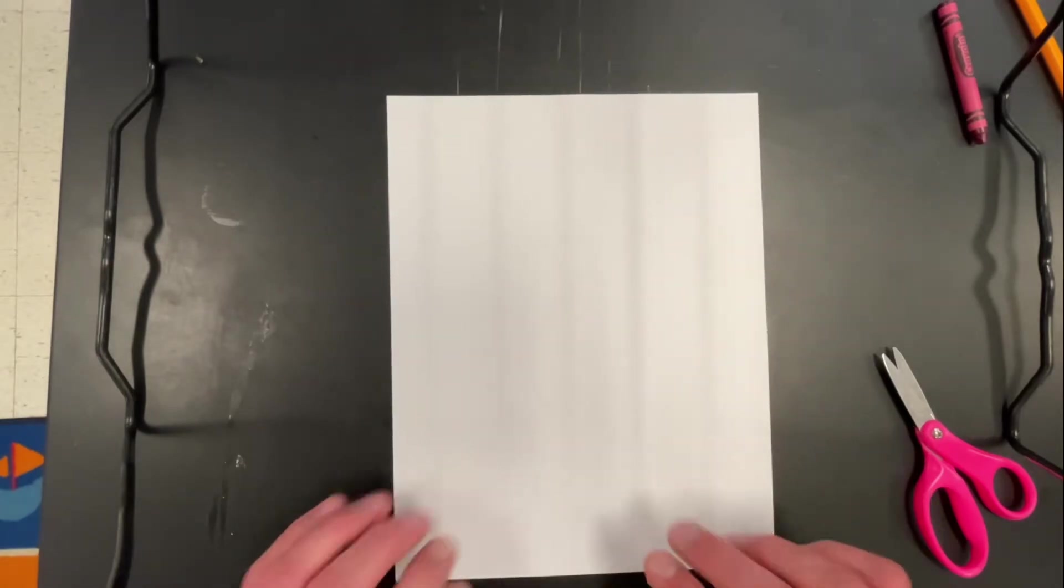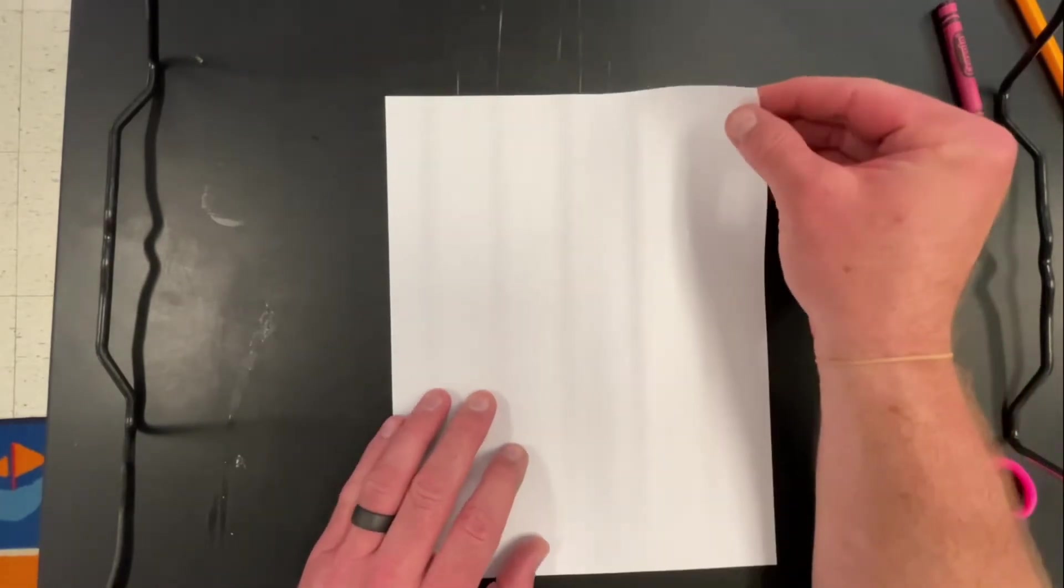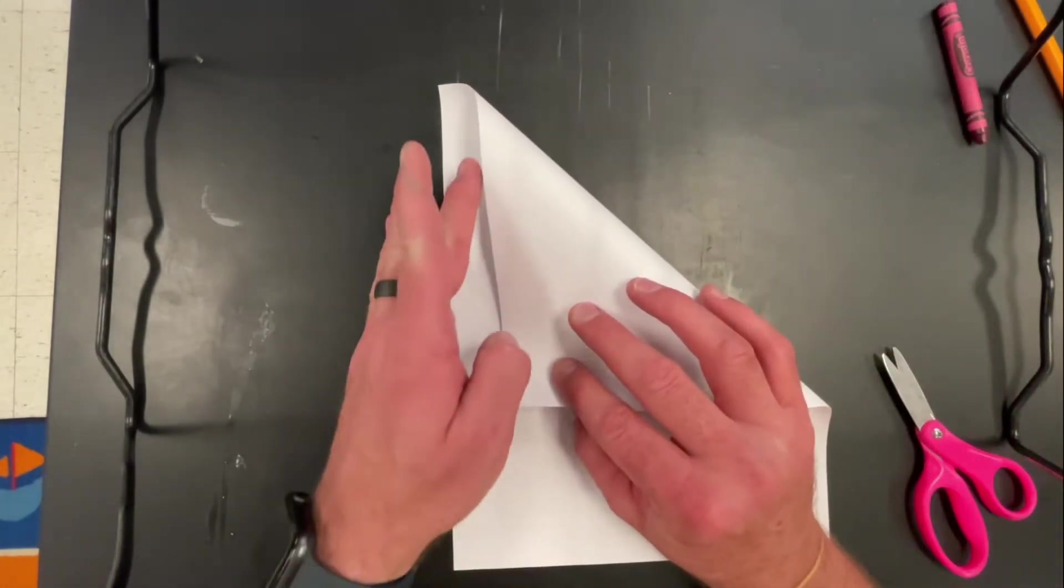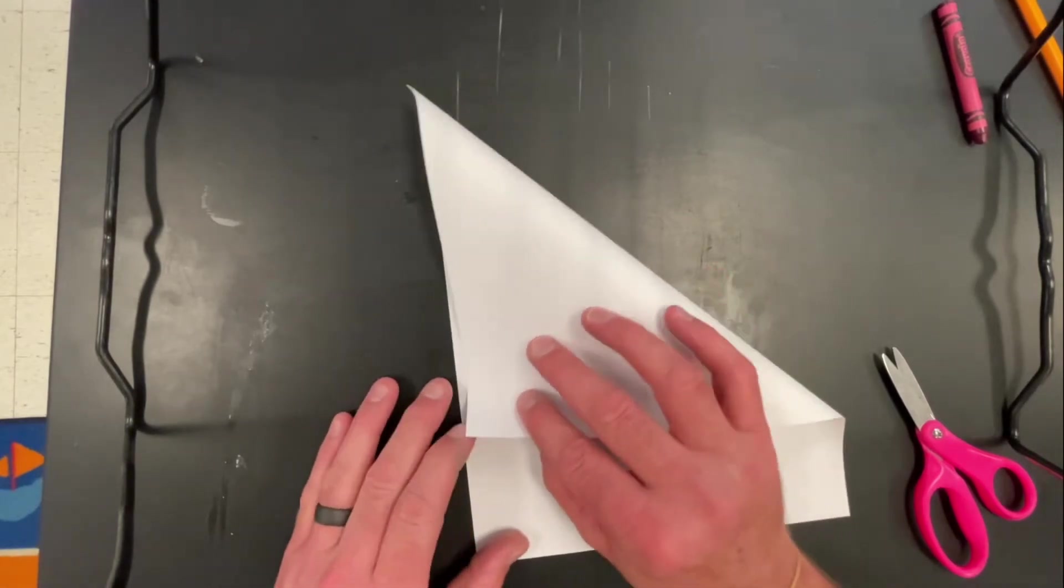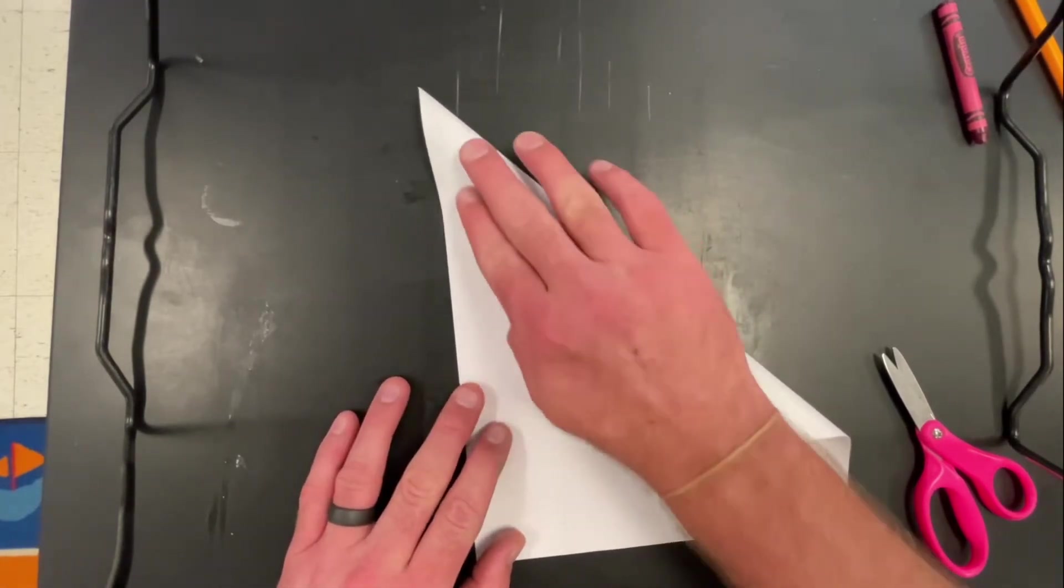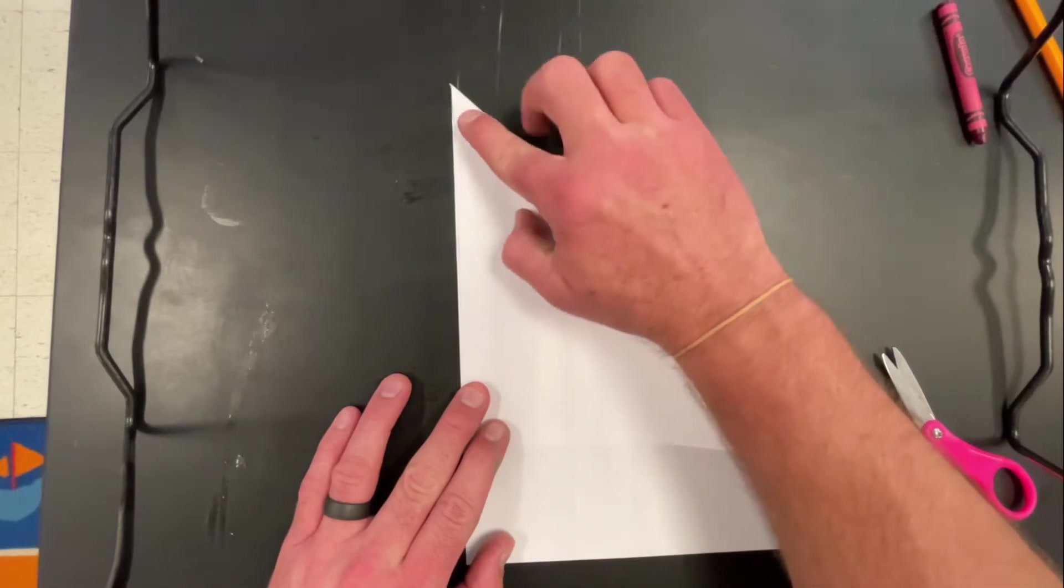With the paper tall and skinny, I'm gonna take one corner and bring it down so that this edge and this edge line up. Takes a little practice and you want it to be a point right there. Doesn't have to be perfect.